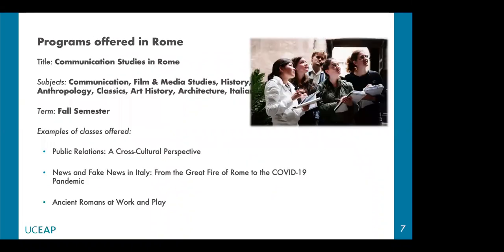Let's see which programs are available in Rome. We'll start with the Communication Studies Fall Semester. Here you can see some examples of classes that have been offered in the past. Some examples of on-site activities are a visit to the marketing department of Italian brands such as Eataly and Verde Pistacchio for the public relations class, a visit to Cinecittà movie studios, a guided tour of the Circus Maximus for the fake news class, and a visit to the Colosseum and Roman Forum led by your faculty member for the Ancient Roman Work and Play class.